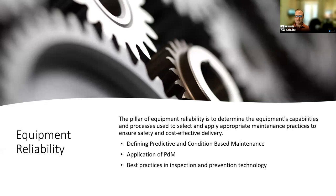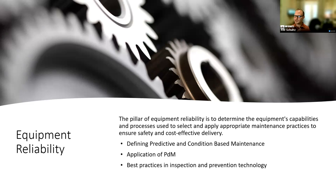Equipment reliability is the third pillar. It is determining the equipment capacities and processes that help select the appropriate maintenance practices that go into play. Now, for the exam, you don't necessarily need to know how to turn wrenches or use complex mathematical formulas — other than understanding the theories behind it. So this is about being able to define what is predictive and condition-based maintenance, how the application of that plays into effect and supports the other pillars, and some of the best practices for inspections and preventive technologies. Understanding the theories and concepts behind that is probably as deep as you need to go as you're preparing for a CMRP.